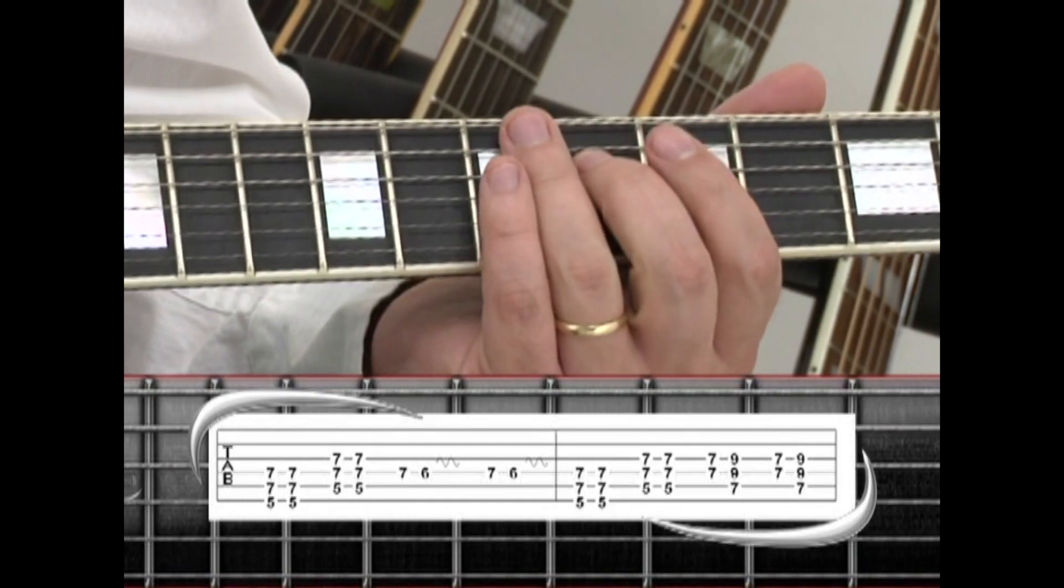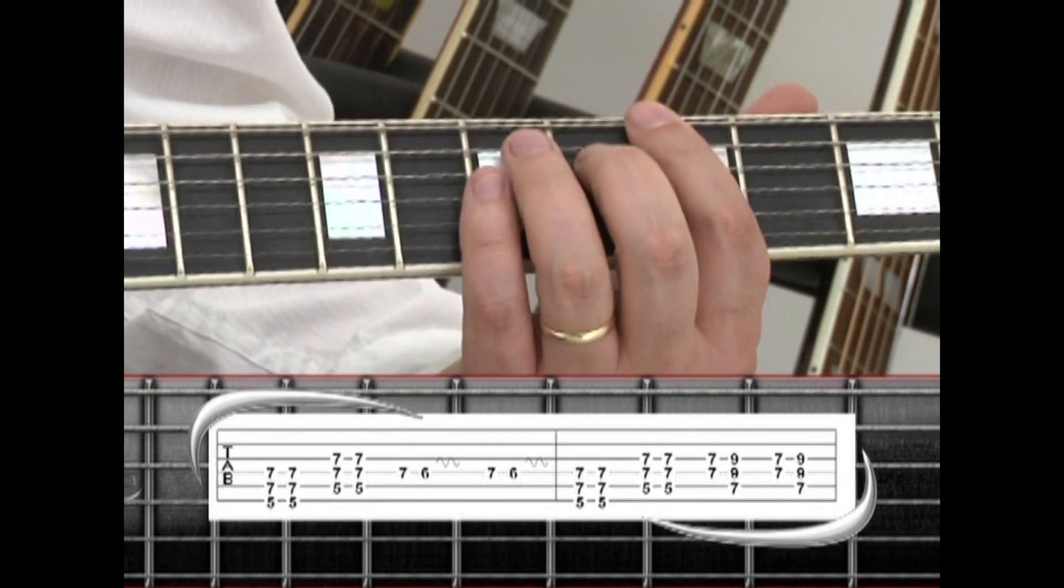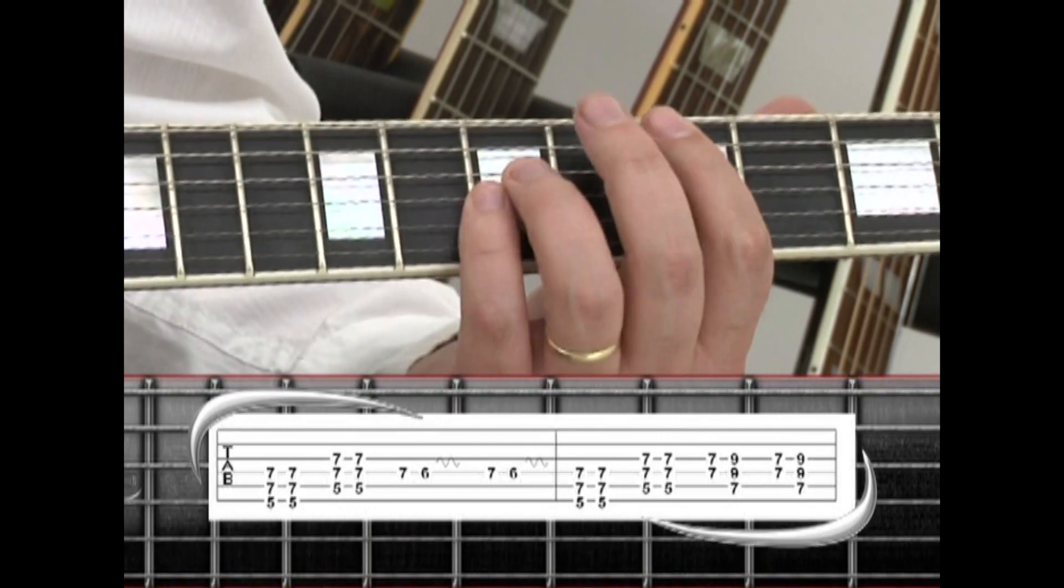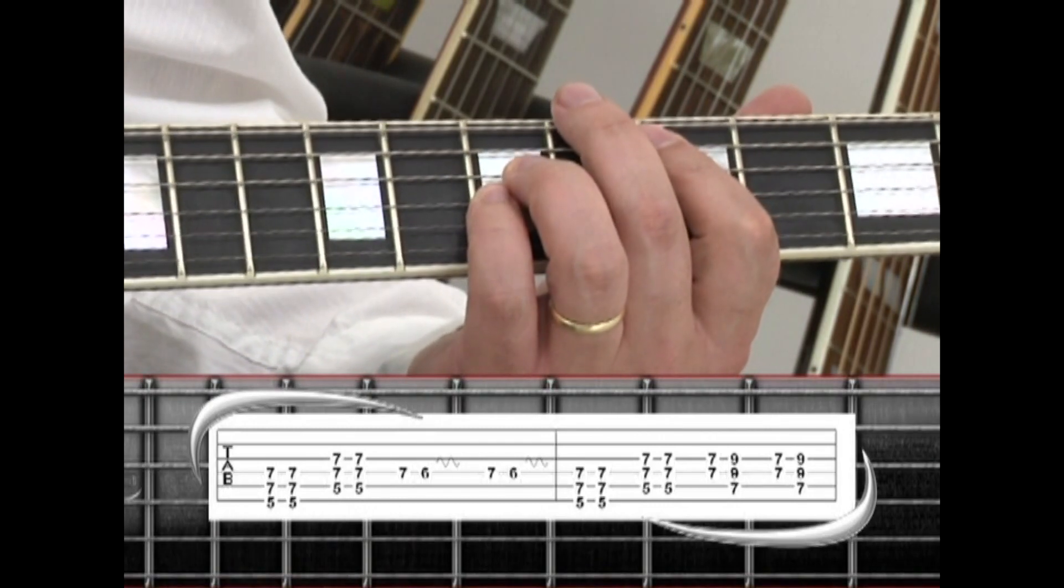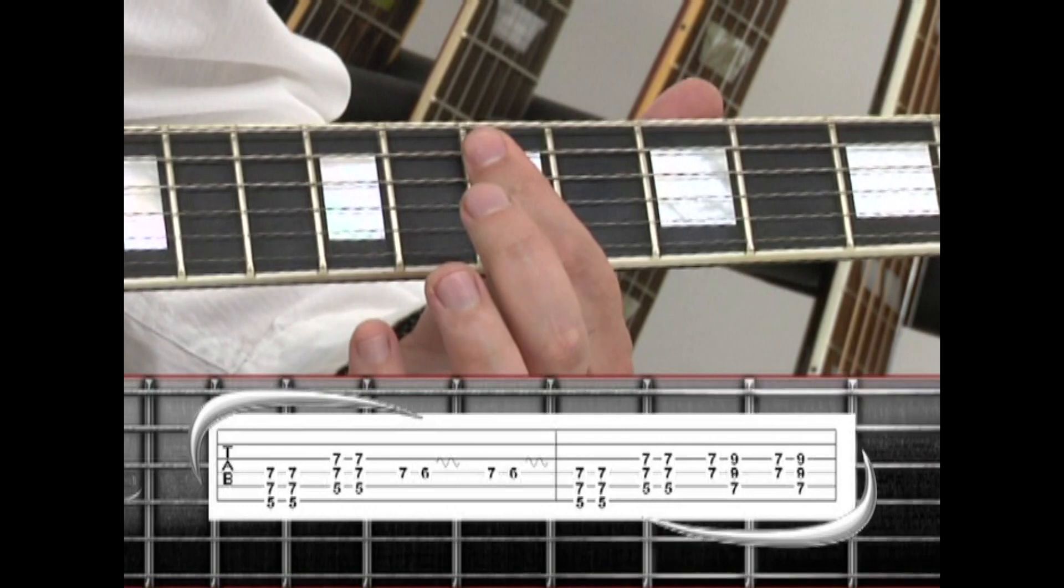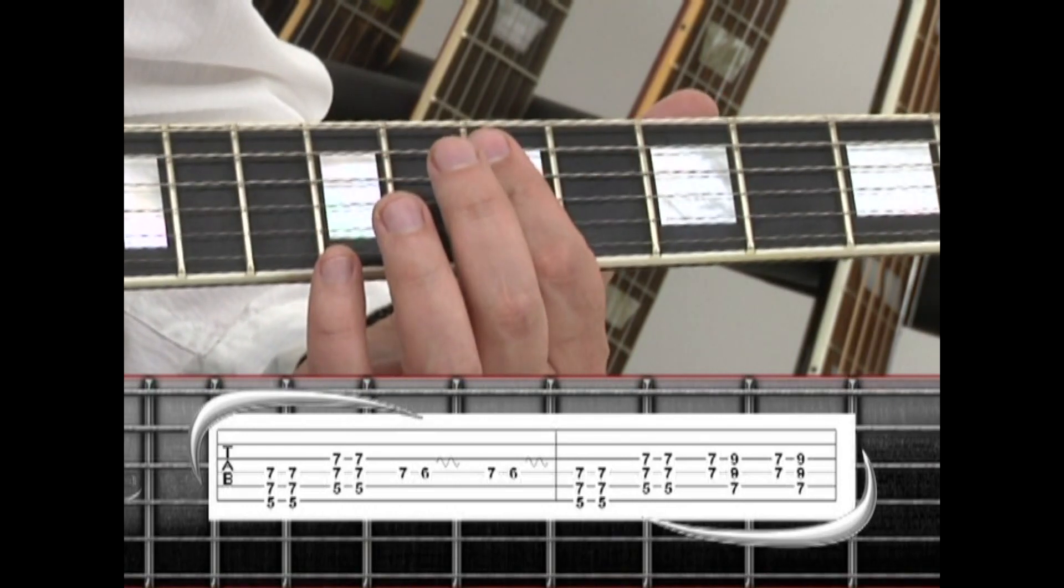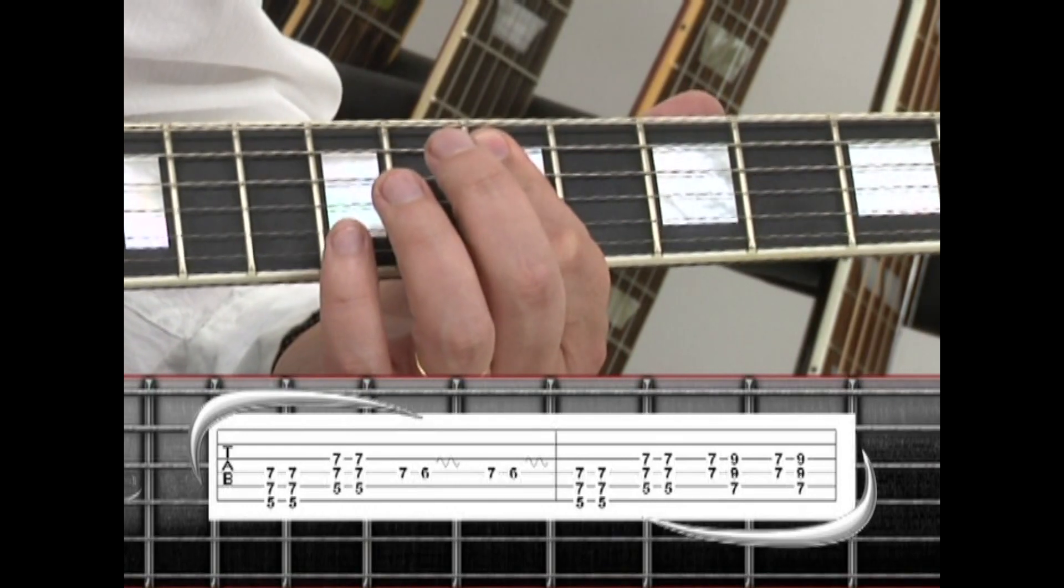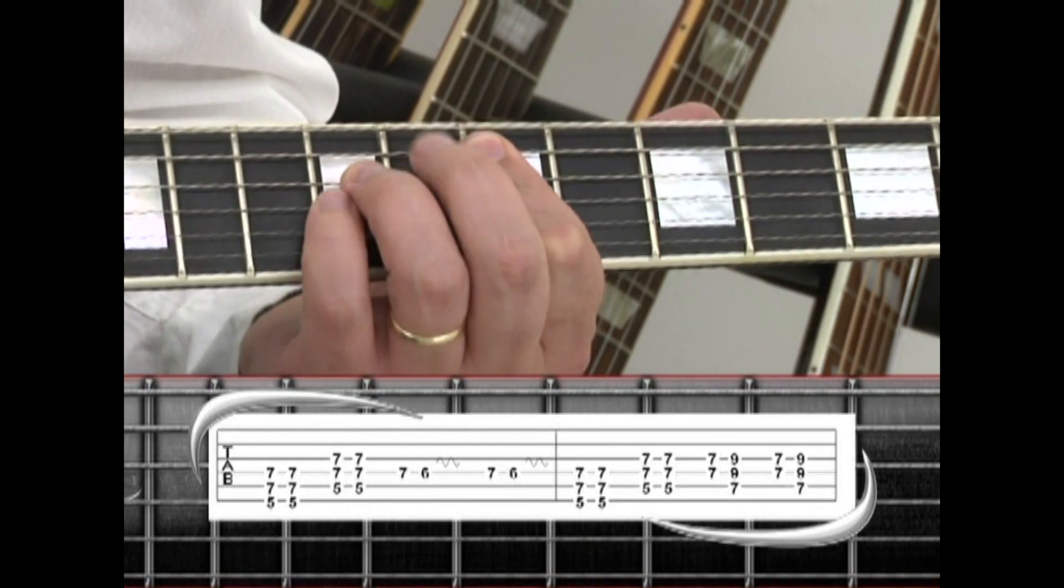Another variation that is played is A5 to D5, then up 2 frets barring the 7th fret with your index, strum strings 3 and 4, then a quick switch to E5.